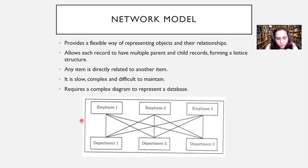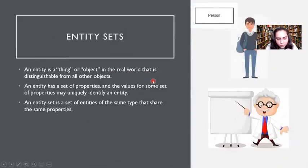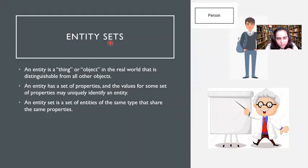So let's start with another very important model — the ER model. In the ER model, the first thing we're going to study is entity sets. You have two things in an ER model: entities and relationships. That is why it is called the ER model. The first thing we are going to see is what entity sets are.